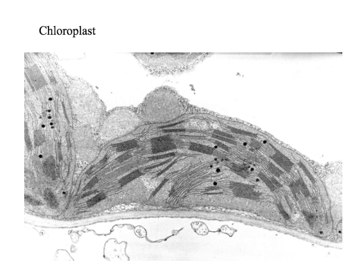Like a mitochondrion, chloroplasts also have their own ribosomes and their own DNA, so they can make their own enzymes for the reactions of photosynthesis.